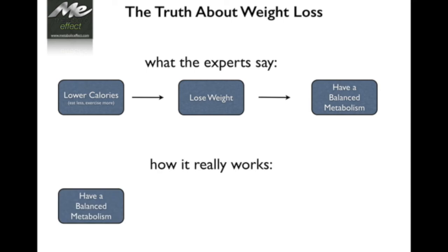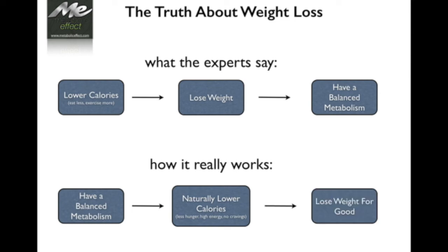The real way it works is like this. You must first balance your metabolism, which will then cause you to naturally lower calories because when you have a balanced metabolism, you'll have less hunger, more stable and high energy, and absent cravings. Because of that, you will then lose weight for good and not just lose weight, but lose fat and not just lose fat, but actually change the shape of your body so that your swimsuit body appears.